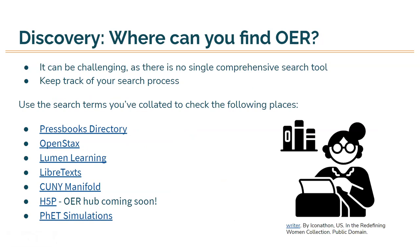Discovering OER can be a bit challenging as there is no single comprehensive search tool, but to make the process easier we recommend keeping track of your search terms and moving methodically through repositories rather than backtracking. On this slide we've provided a list of a few key OER repositories to consider. We've also linked these and more in the worksheet provided below, and you'll hear a deeper dive into the Pressbooks directory shortly. All of these can be great resources for seeing what's out there and trying to find those components that you want your course to cover.